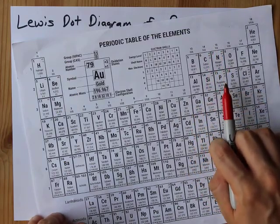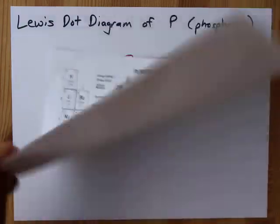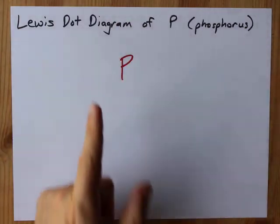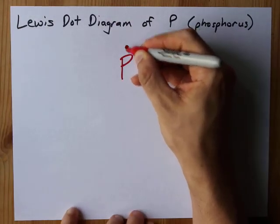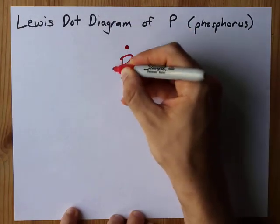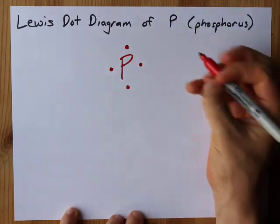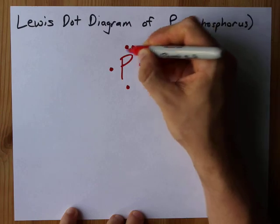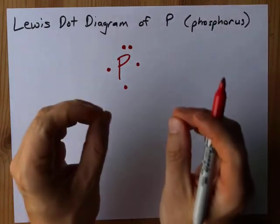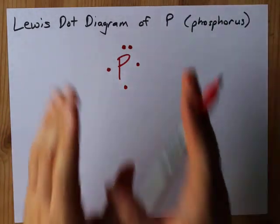Phosphorus in group 15 has 5 valence electrons. The way that I personally do that is I fill 1, 2, 3, 4 electrons, spread them out before I start doubling them up, and then I put the fifth as one pair there. This is my Lewis dot diagram for just phosphorus.